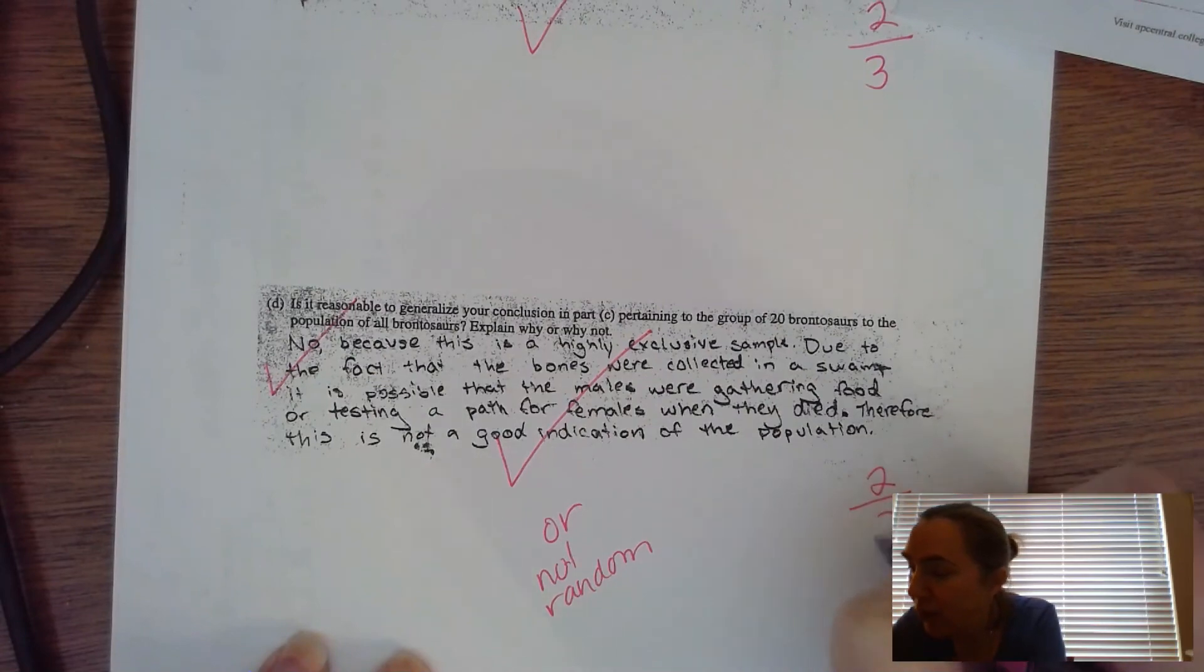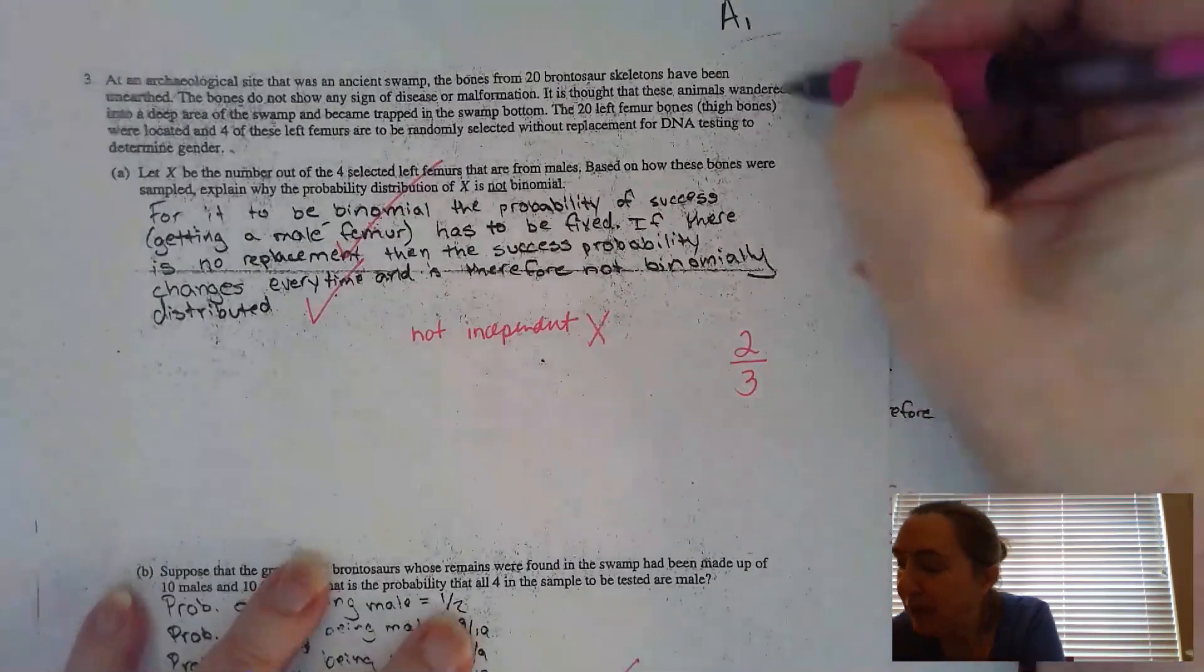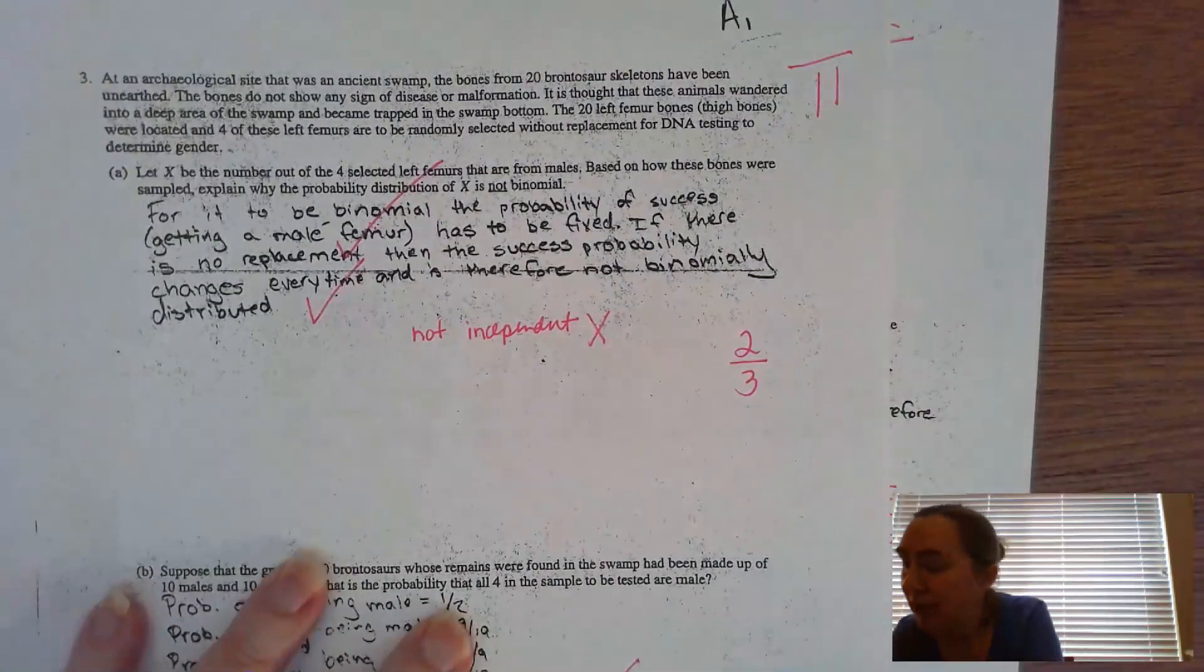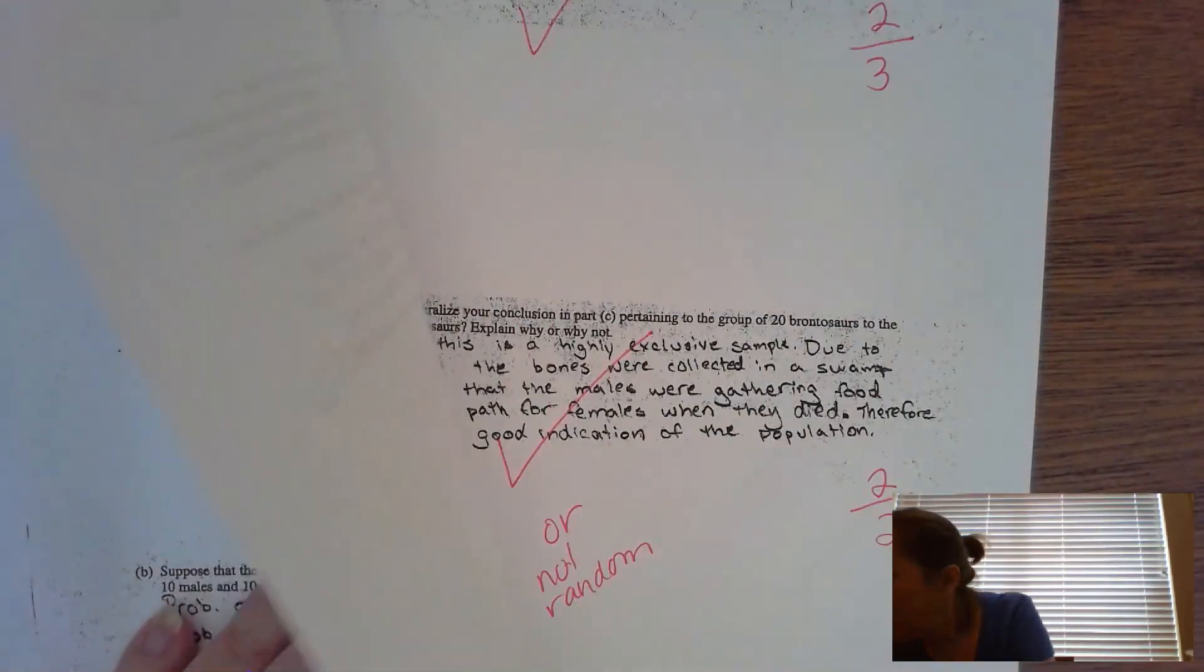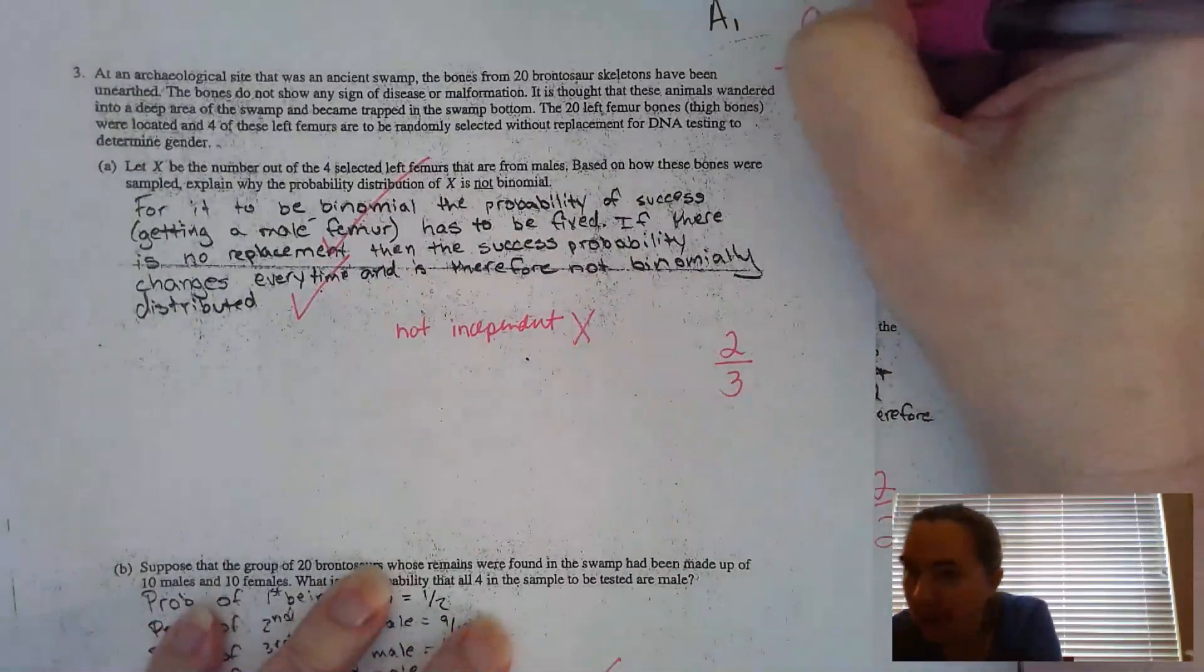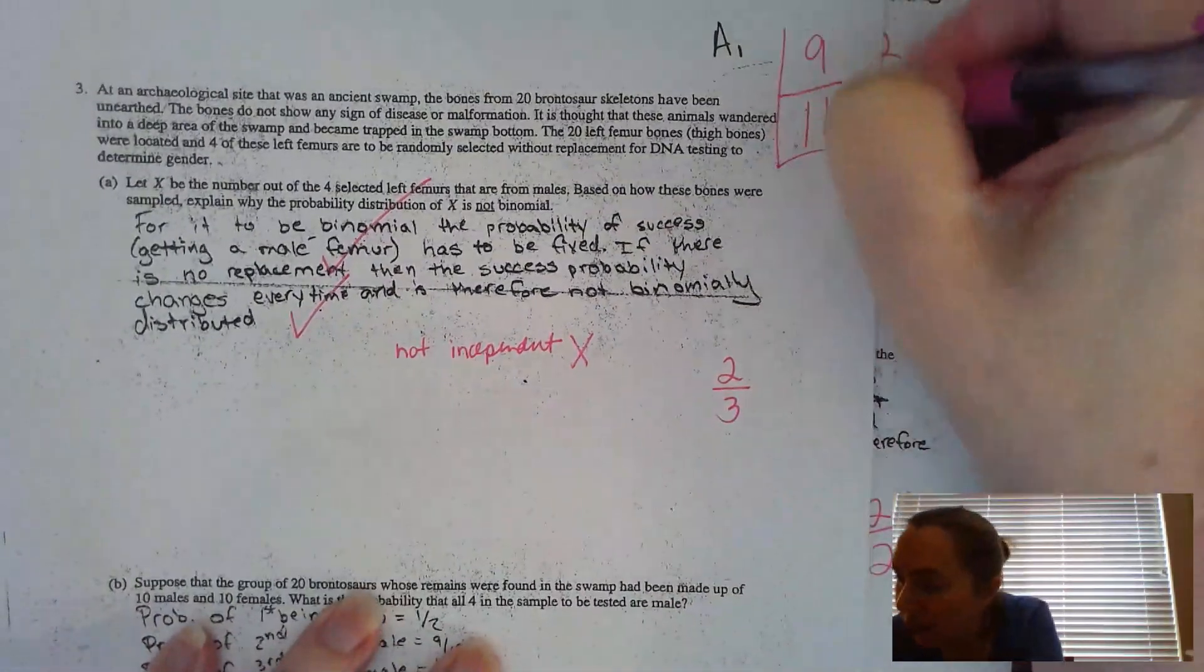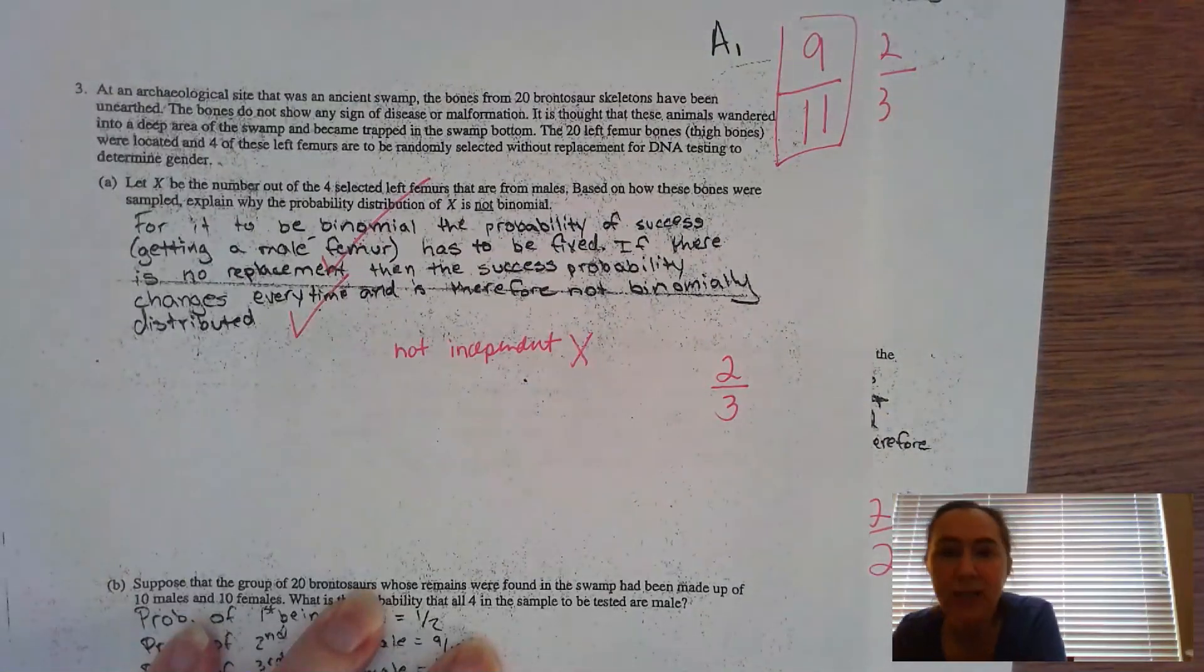So this one is only worth two points. My person got two out of two. Two plus three is five, five plus three is eight, eight plus three is 11. So this is worth 11 points. My person missed two out of them, so they got nine out of 11. So you figure out what your score is and thanks for listening.